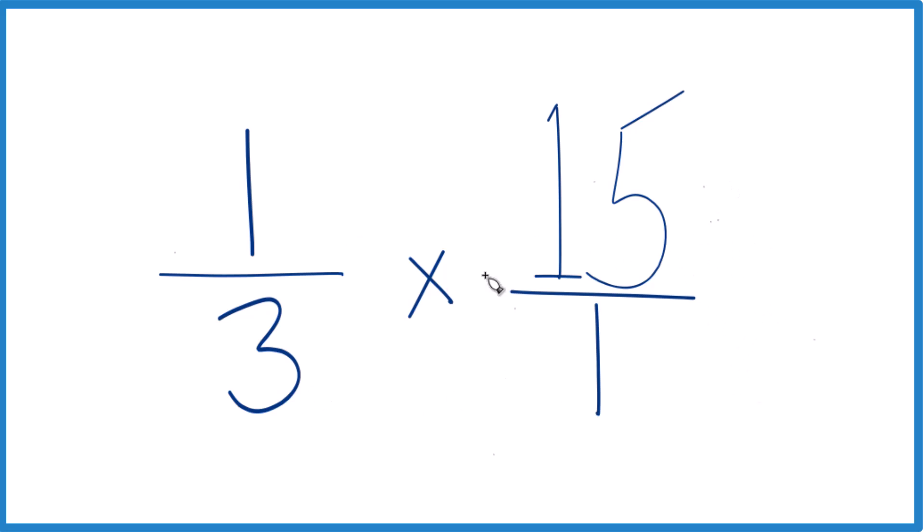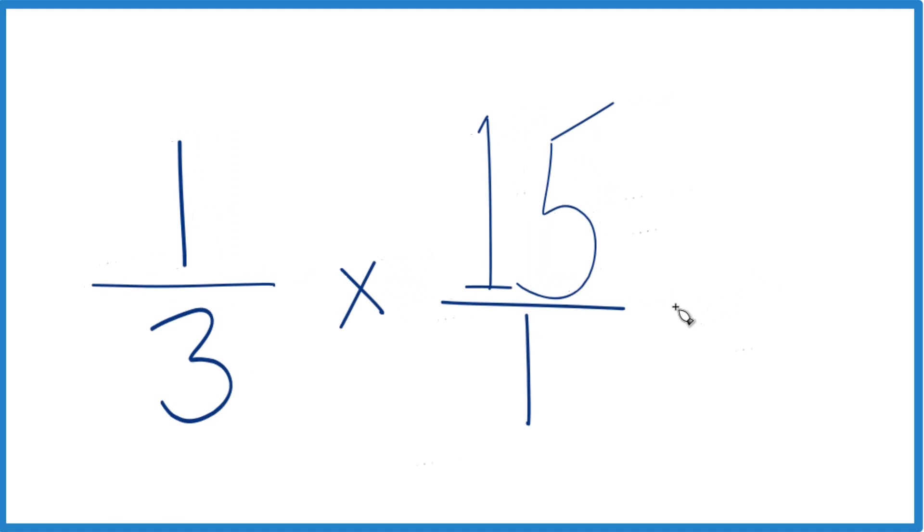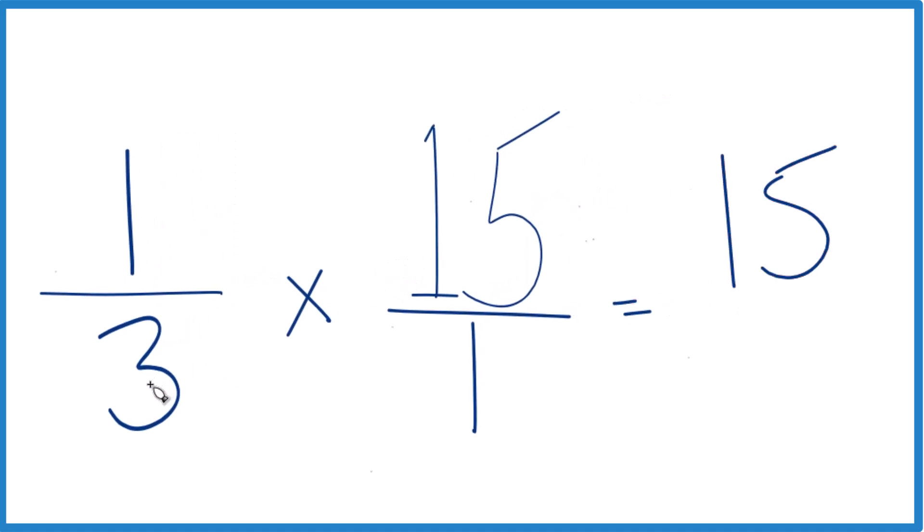And when we multiply fractions, we multiply the numerators: 1 times 15, that's 15. And then the denominators: 3 times 1, that's 3.